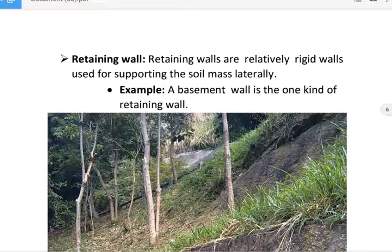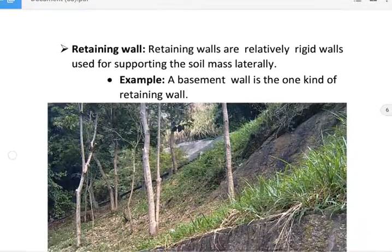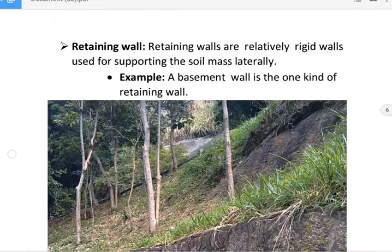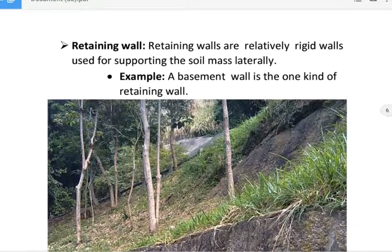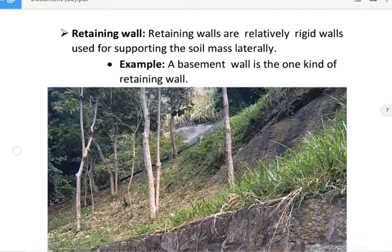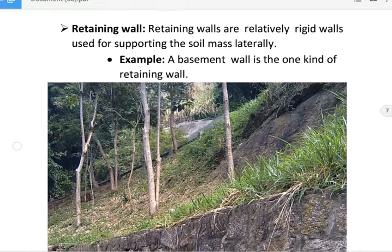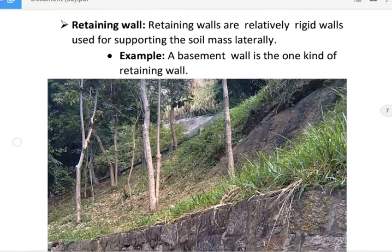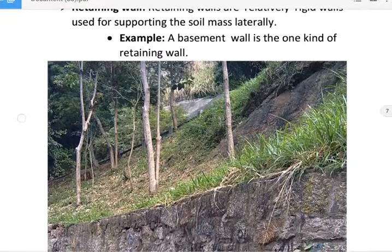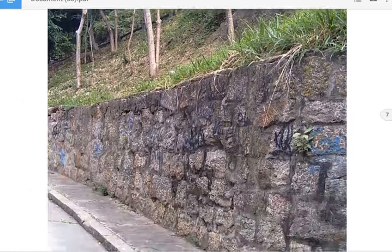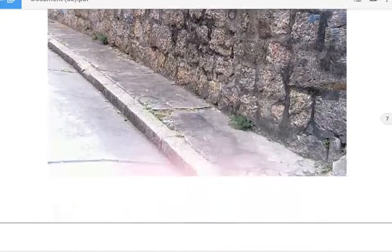Next, retaining wall. Retaining walls are relatively rigid walls used for supporting soil mass laterally. For example, a basement wall is a kind of retaining wall. Retaining wall is shown in figure.